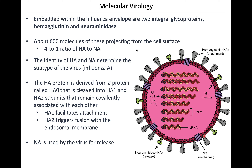HA is important for attachment and NA for virus release. HA is derived from a precursor called HA0, which is cleaved into two subunits - HA1 and HA2 - that remain bound to each other. So when we say HA, it's really a complex of HA1 and HA2. HA1 is important for the initial attachment of the virus, while HA2 is important for uncoating at the endosomal membrane.